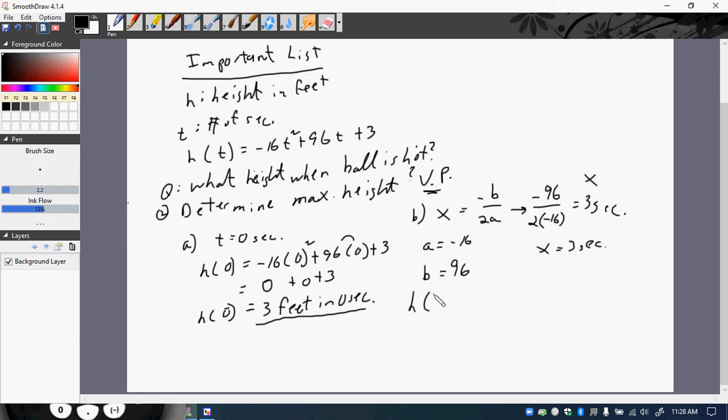So h of 3 seconds, and I put it back into the original. It's negative 16 times 3 squared plus 96 times 3 plus 3.